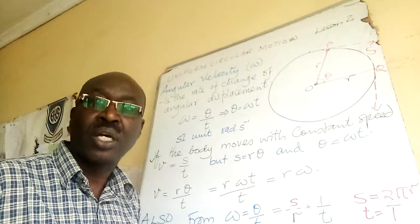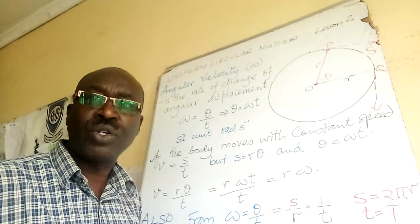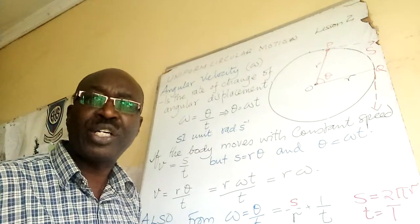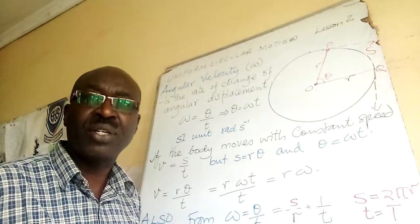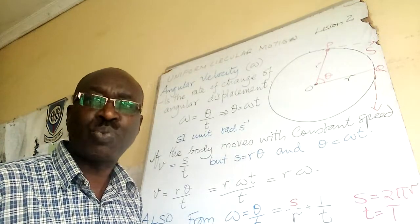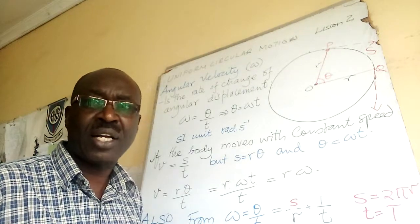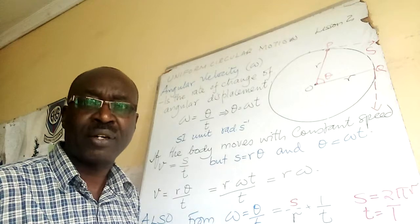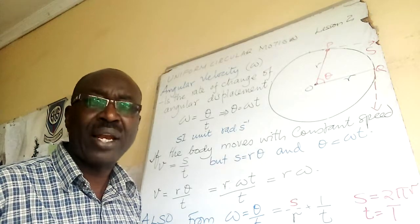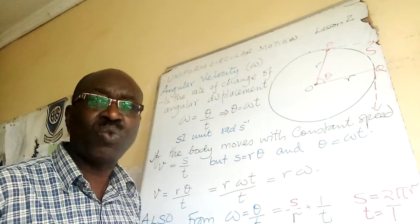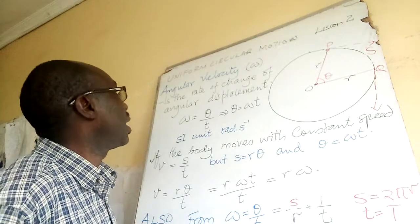Welcome to uniform circular motion lesson two. In lesson one, we saw the definition and interpretation of motion in a circle, where we identified distance, displacement, and angular displacement, and came up with the formula for radian. Theta in radian is equal to S over R — a radian is the angle subtended at the center when the arc length S is equal to the radius. Today we are going to look at angular velocity.